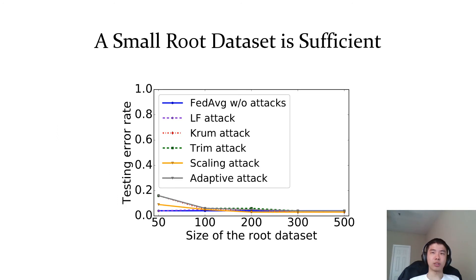This figure shows the impact of the size of the root dataset on our method. We observe that a root dataset with only 100 training examples is sufficient for FLTrust to defend against poisoning attacks — the testing error rates of FLTrust under attacks are similar to that of FedAverage without attacks. When the size of the root dataset increases beyond 100, the testing error rates of FLTrust slightly decrease.